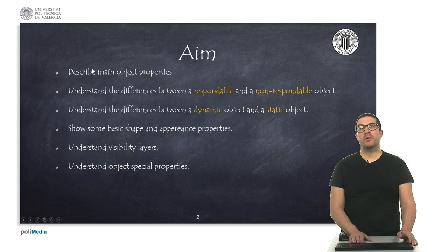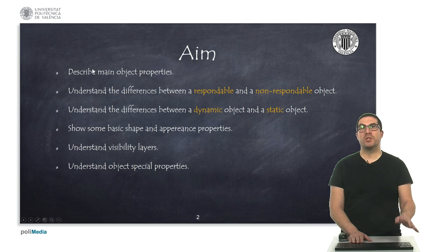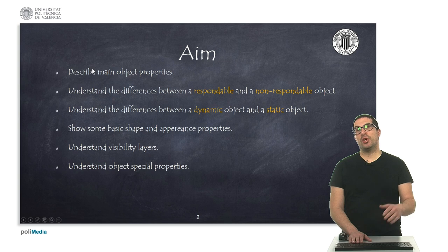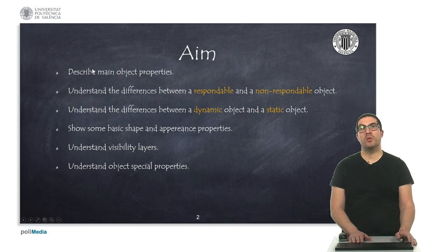The aims of the presentation are to describe the main properties of objects in Coppelia sim, understand the differences between respondable and non-respondable objects as well as between dynamic and static objects, to show some of the basic properties of shape and appearance of an object, understand visibility layers of objects, and understand special properties of an object that will affect the way in which the simulation is performed.